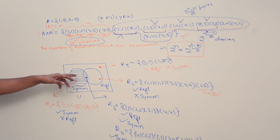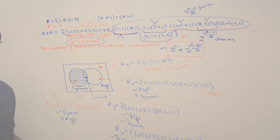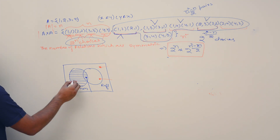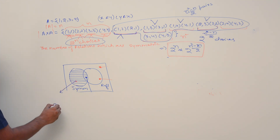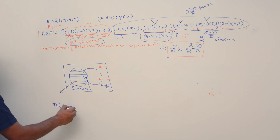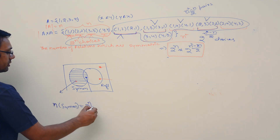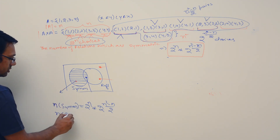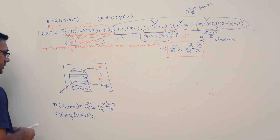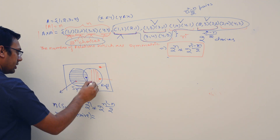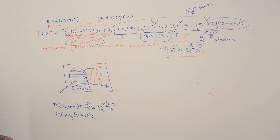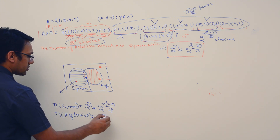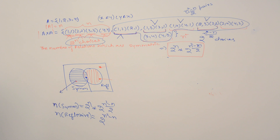Now let us try to find out the relationship between symmetric and reflexive relations. The number of relations which are symmetric is 2^n × 2^((n² − n)/2). The number of relations which are reflexive — which we have already answered previously — is 2^(n² − n). The total number of relations possible is 2^(n²).